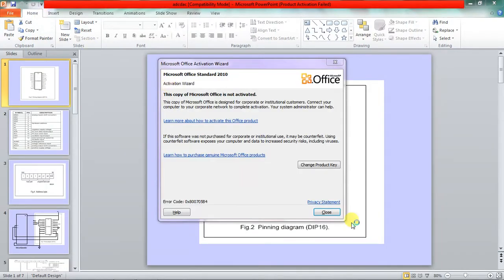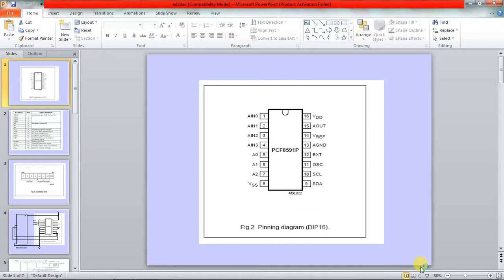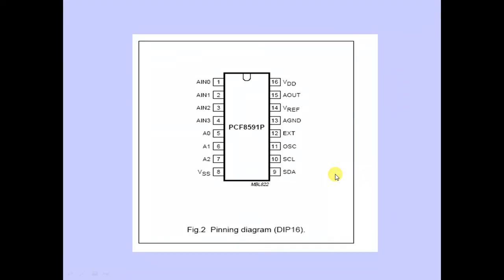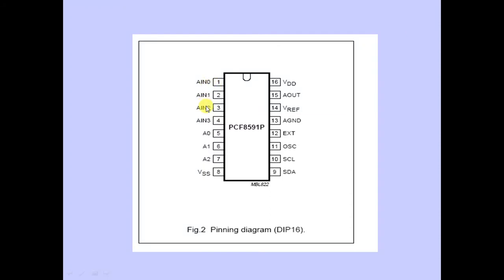Let's go through a complete explanation of the PCF8591 device - its pins and their functions. The PCF8591 is a device from Philips Corporation used for analog-to-digital and digital-to-analog conversion. It consists of 16 pins in a DIP (dual inline package). The first four pins are analog inputs: AIN0, AIN1, AIN2, and AIN3.